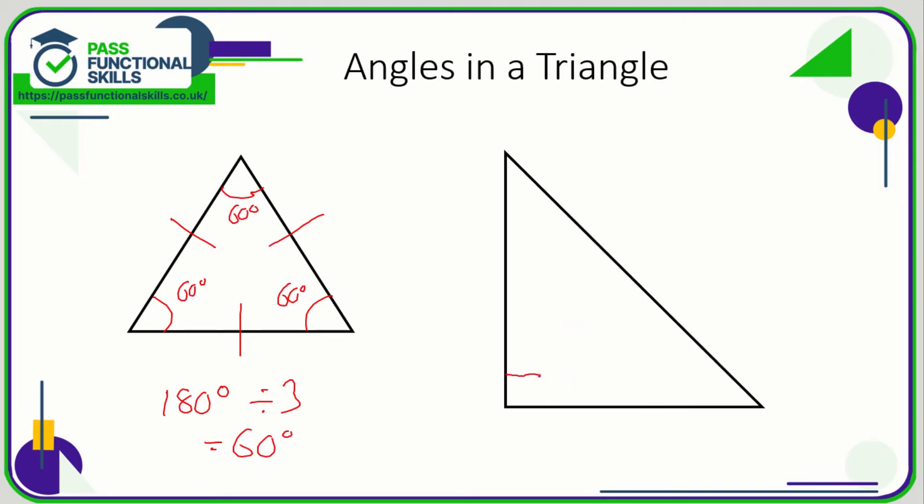In a triangle you might have this symbol here which tells you that this is a right angle. Now a right angle is 90 degrees. So if this is labeled with that symbol there and maybe you're told this angle here is 40, more likely that it won't write in 90.